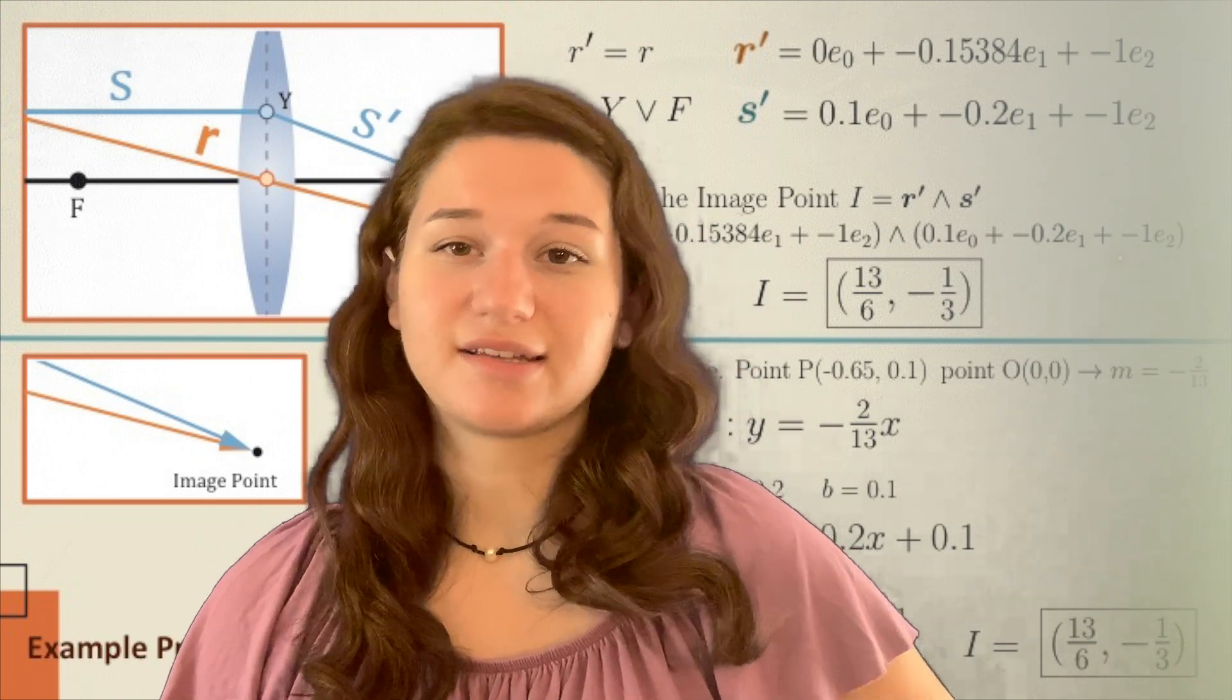Next, since we know that ray S is parallel to the axis and exits through the back focal point, we know the slope is negative B over F and its height is 0.1, so there we get ray S'. I set them equal to one another and I solve for the intersection. Instead of solving any equations, PGA allows us to use simple multiplication operators to intersect lines and join points.